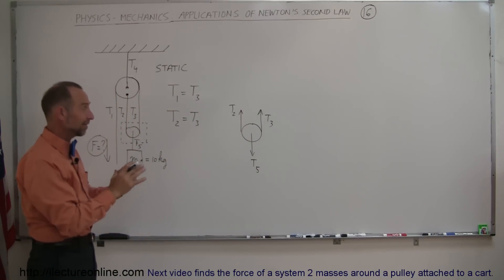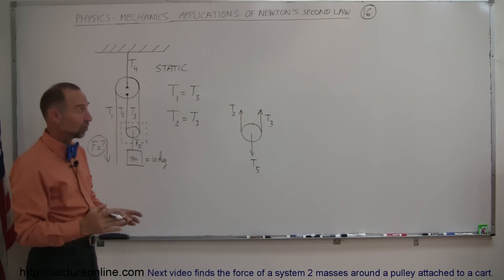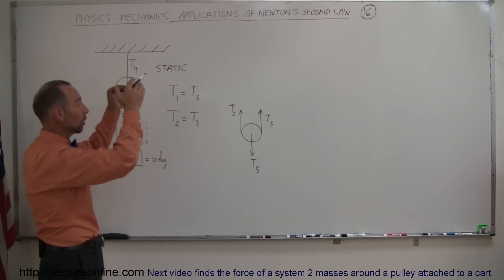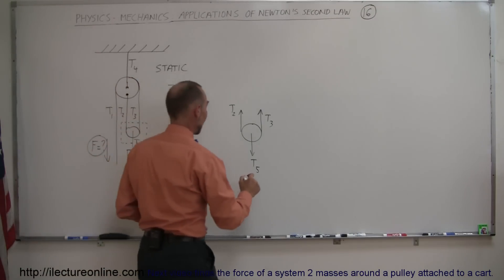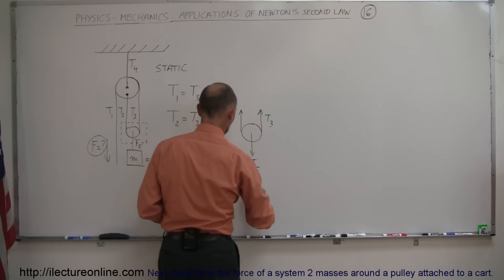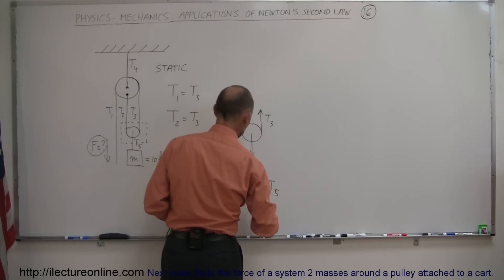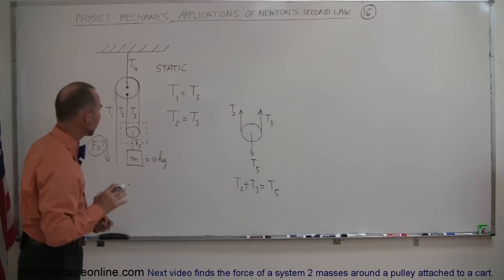Notice that since this is a static situation, all the forces in the upward direction must equal all the forces in the downward direction so that there's no net force in the y direction, which means that T2 plus T3 must equal T5 in magnitude. Alright, so that's established now.